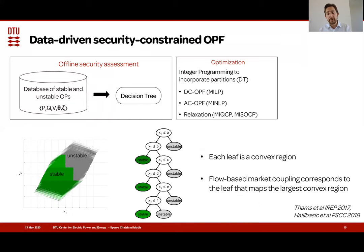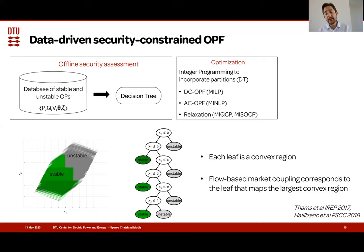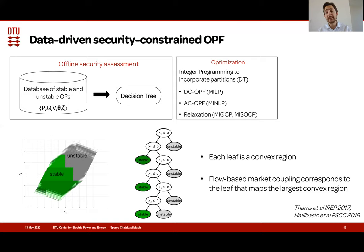We can solve a MILP if we're talking about a DC optimal power flow with linearized equality constraints. We should solve a mixed integer nonlinear program if the equality constraints are the original quadratic power flow equations, or we can also do a relaxation and convexify the problem to obtain a mixed integer second-order cone or quadratic convex formulation.